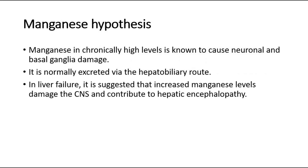For the manganese hypothesis, manganese in chronically high levels is known to cause neuronal and basal ganglia damage. It is normally excreted via the hepatobiliary route. In liver failure, it is suggested that increased manganese levels damage the CNS and contribute to hepatic encephalopathy.